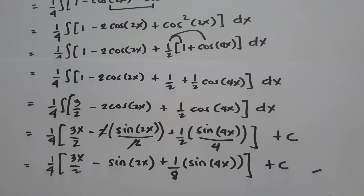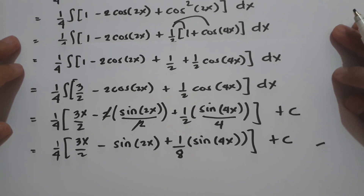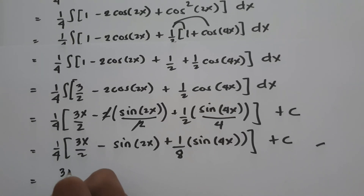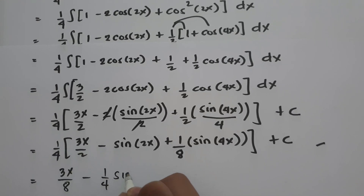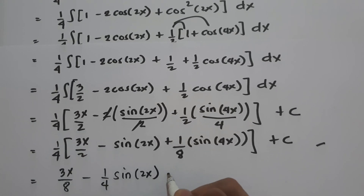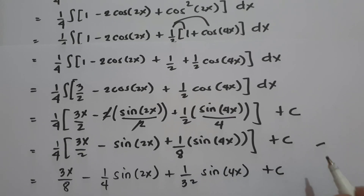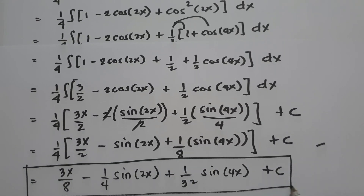This will be our answer. Or if you want, you can distribute the one fourth: 3x over 8 minus one fourth sine 2x plus one over 32 sine 4x plus C. And this will be our final answer. I hope you've learned from this video. Thank you so much for watching and God bless us all.